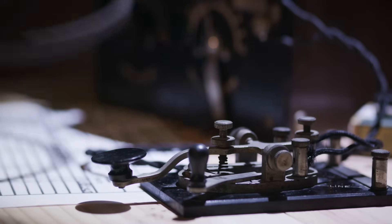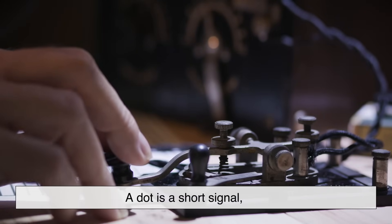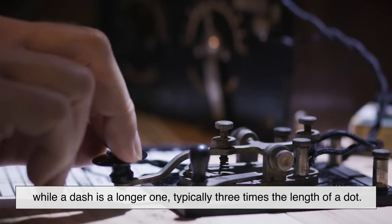When sending a message in Morse code, the timing between signals is crucial. A dot is a short signal, while a dash is a longer one, typically three times the length of a dot.